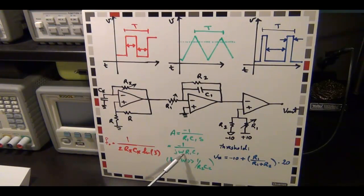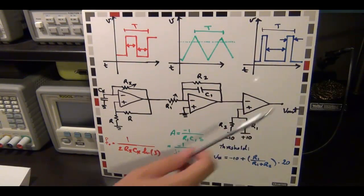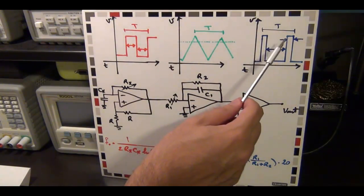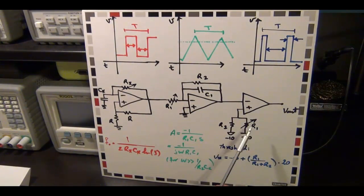And then here, by controlling this R1, I should be able to change the threshold, meaning I should be able to change the duty cycle. So I will be able to set the duty cycle by setting the value of R1, which shows up in this equation.